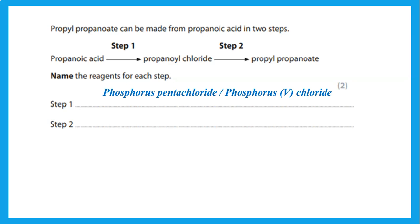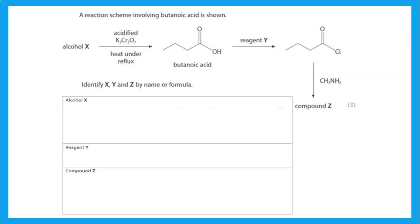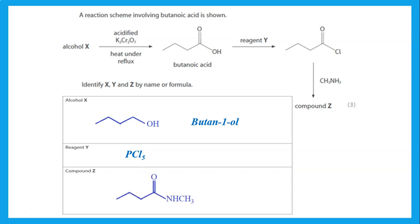A reaction scheme involving butanoic acid: starting with an alcohol, adding acidified potassium dichromate gives butanoic acid, so the starting alcohol must be butan-1-ol. To convert butanoic acid to butanoyl chloride, we add PCl₅. When the acid chloride reacts with methylamine, the product is N-methylbutanamide.